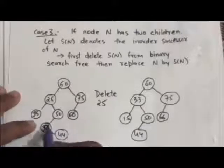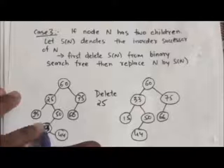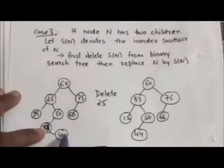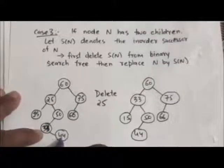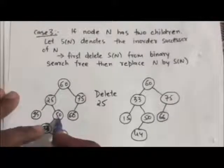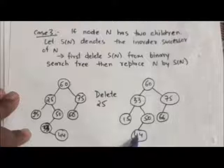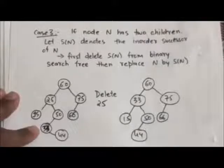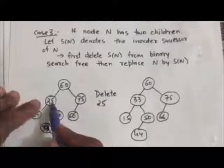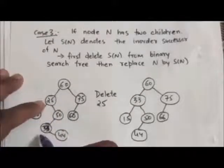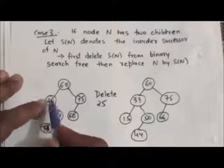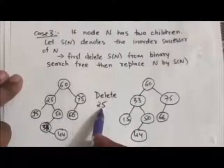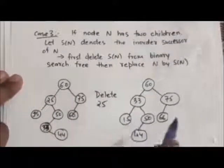To summarize: first we deleted the in-order successor of node 25, which was node 33. When node 33 was deleted, node 44 became the left child of node 50. Then we replaced node 25 with its in-order successor, node 33. After deleting node 25 from this binary search tree, we get the resulting binary search tree.